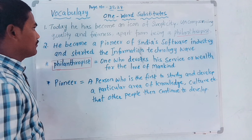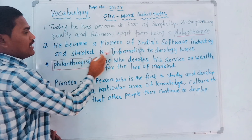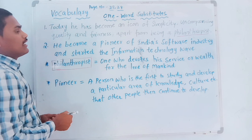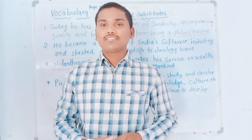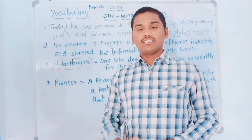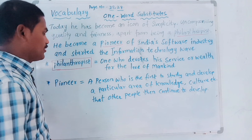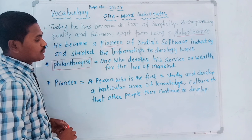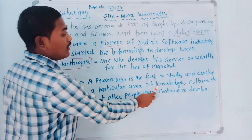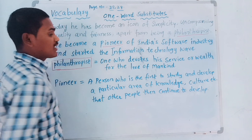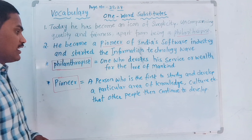Now, look at the second example: 'He became a pioneer of India's software industry and started the information technology world.' So in this sentence, I am underlining 'pioneer.' What is the meaning of pioneer? It is also, the same as we discussed previously about philanthropist — it is a one word substitute for a lengthy sentence. The meaning of pioneer is: a person who is the first to study and develop a particular area of knowledge, culture, etc., that other people then continue to develop.